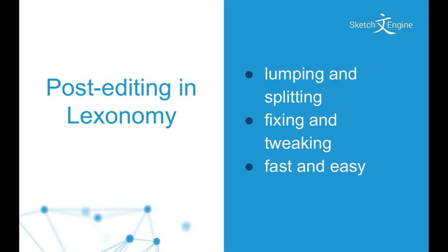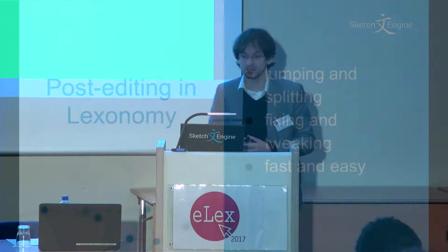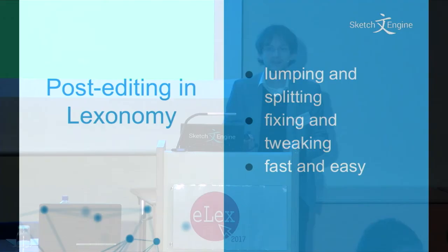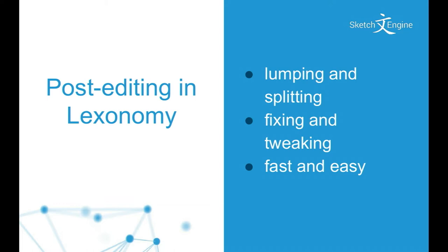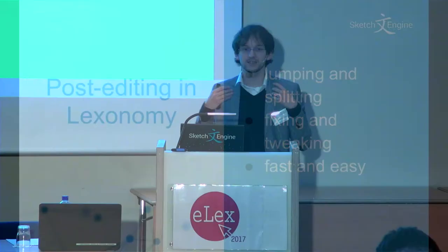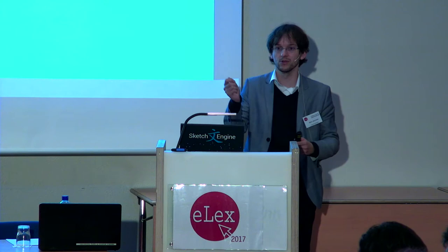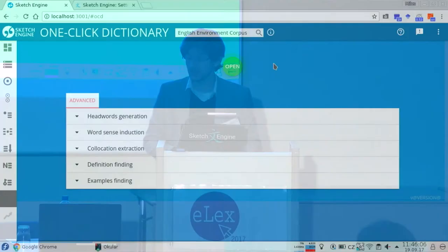Once the draft is ready in Lexonomy, what comes from the lexicographical point of view is the lumping and splitting, fixing and tweaking — and it should be by all means fast and easy. That's our goal with Lexonomy: to make the post-editing really comfortable, so that it doesn't happen what happened in translation, where lots of translators were saying 'I can just delete the whole thing and translate from scratch.' The success is defined as the draft being faster to edit than if the lexicographer would just delete it and start from scratch. Okay, the button is green.